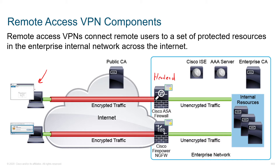Once the client leveraging AnyConnect or their browser is able to connect to the head end, the head end is going to require them to authenticate. Those credentials can either be stored locally — this is a quick dirty way to set it up, works great for a lab environment. But for enterprise, we're doing things more scalably; we're probably going to want to incorporate a AAA server. We'll tie our ASA or Firepower appliance into Active Directory or into Cisco's Identity Services Engine.